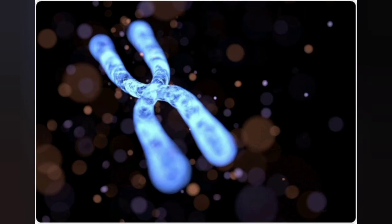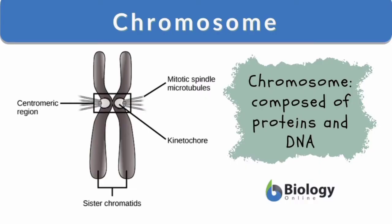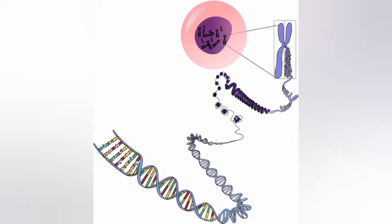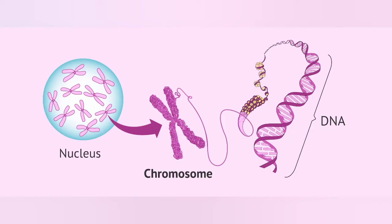Chromosomes are filamentous bodies which are typically present in the nucleus. Chromosomes are visible only during the time of cell division; in the active nucleus the chromosome is not visible because of having high water content. The chromosome was discovered by a German cytologist Waldeyer in the year 1888. The term chromosome represents chroma meaning color and soma meaning body, so chromosome is called a colored body.